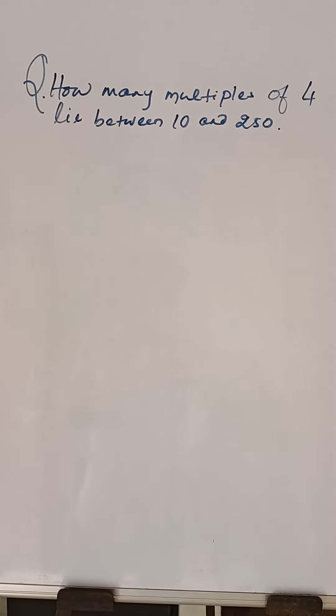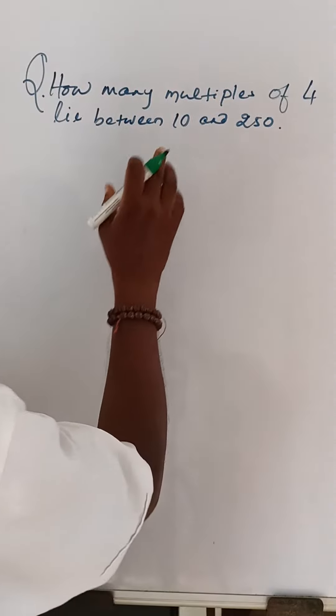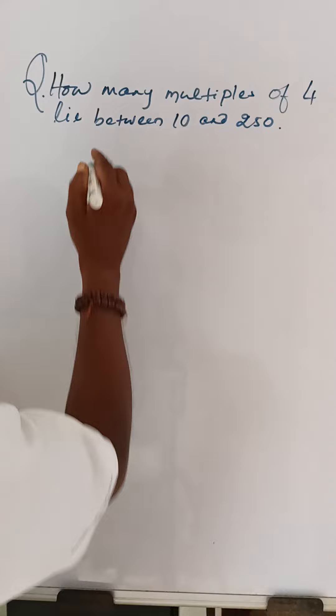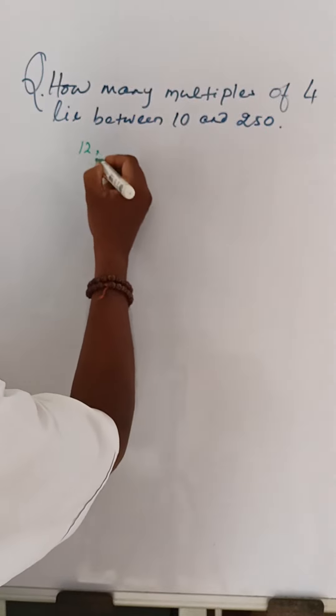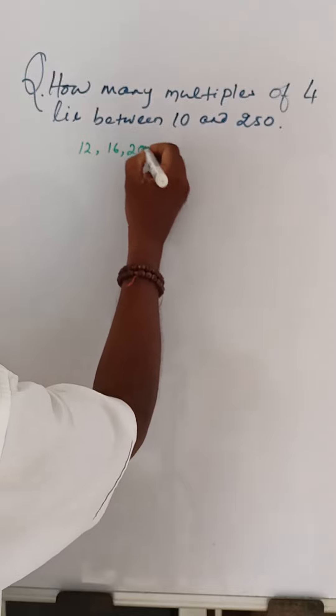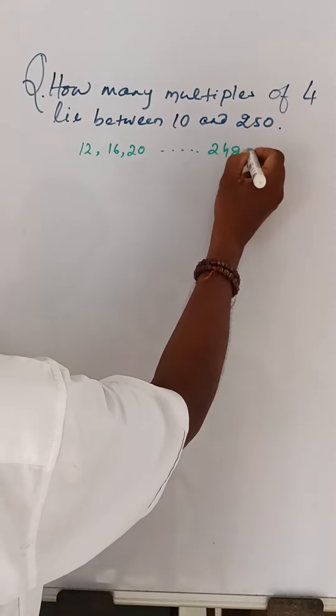How many multiples of 4 lie between 10 and 250? All multiples of 4 lying between 10 and 250 are 12, 16, 20 till 248.